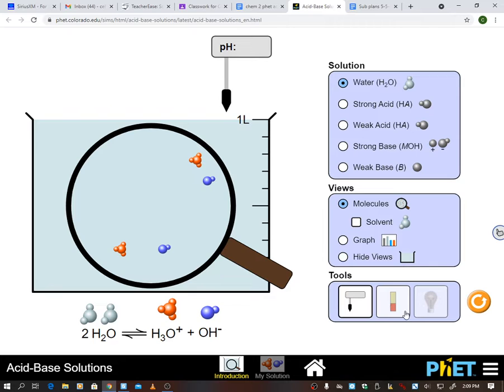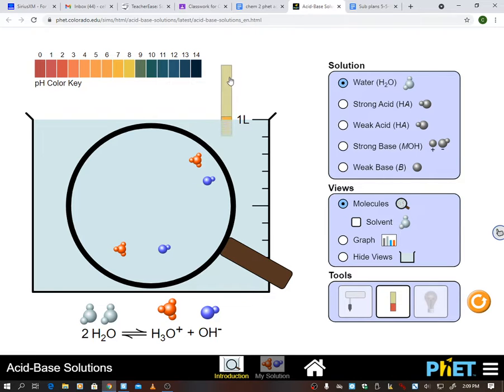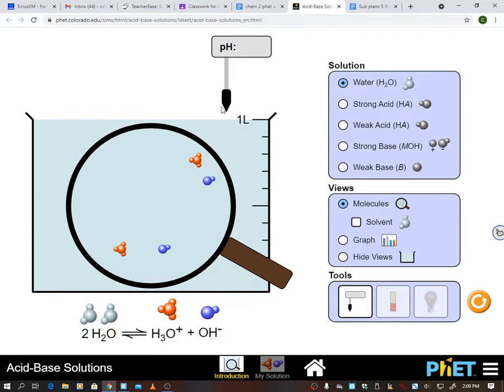Or I can change my tool to this litmus paper. So I dip the litmus paper in and drag it out. And then I can drag it over here and be like, which one is it closest to? So right now I've not changed anything on the solution. So this is water. And it looks to be about a 7. Okay, so then I can go back to this. It gets rid of all that. Or you can click.